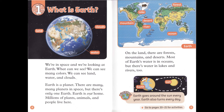Chapter 1: What is Earth? We're in space, and we're looking at Earth. What can we see? We can see many colors. We can see land, water, and clouds. Earth is a planet. There are many, many planets in space, but there's only one Earth. Earth is our home.